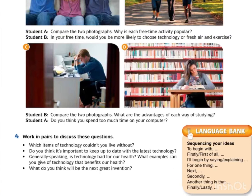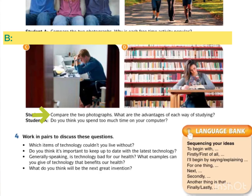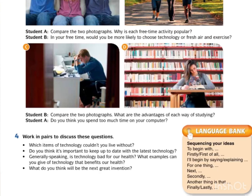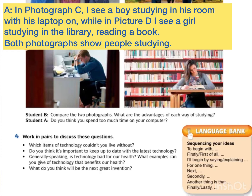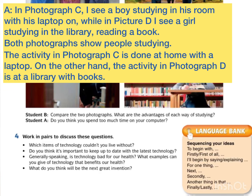B tanya soalan tentang photograph C dan D: 'Compare the two photographs — what are the advantages of each way of studying?' A, ikut cara B jawab tadi: nyatakan dulu apa yang nampak. 'In photograph C, I see a boy studying in his room with his laptop on. While in photograph D, I see a girl studying in the library, reading a book.' Kedua, A nyatakan persamaan: 'Both photographs show people studying.' Ketiga, A nyatakan perbezaan: 'The activity in photograph C is done at home with a laptop. On the other hand, the activity in photograph D is at a library with books.' Then baru jawab soalan.